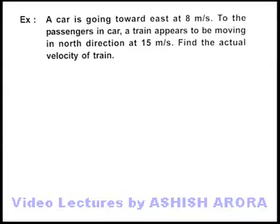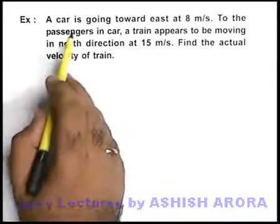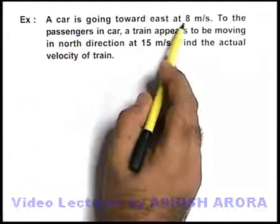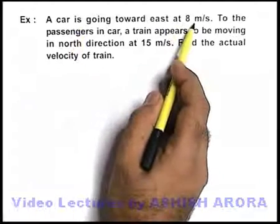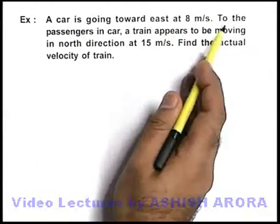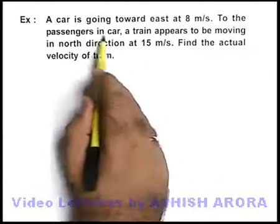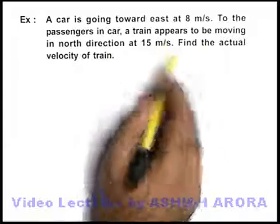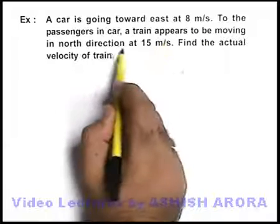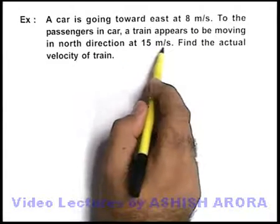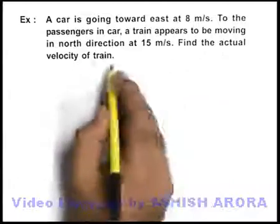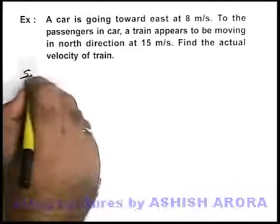In this example, we are given that a car is going toward east at 8 meters per second, and to the passengers in the car, a train appears to be moving in the north direction at 15 meters per second. We are required to find the actual velocity of the train.